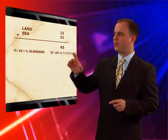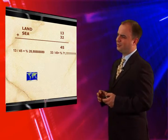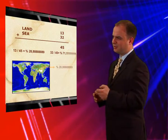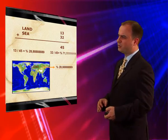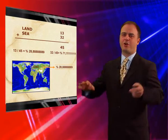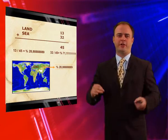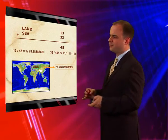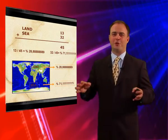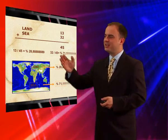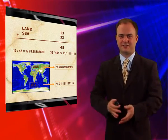Do you have any idea what those percentages represent? All the land all over the world occupies 28.88% of the whole Earth, and all the seas, oceans, rivers, and water occupy 71.11% of the whole Earth. These repetition numbers are very meaningful and represent clear scientific evidence that the Holy Quran is the word of Allah.